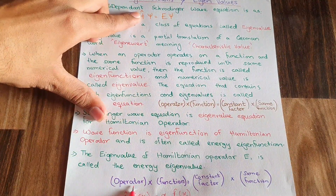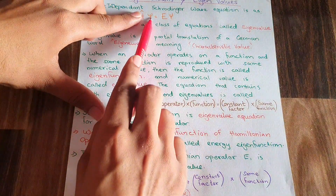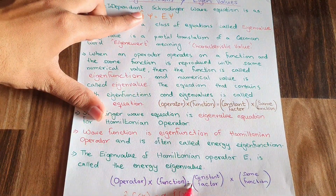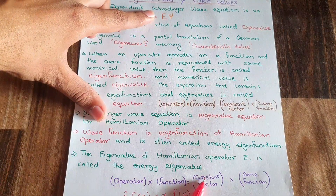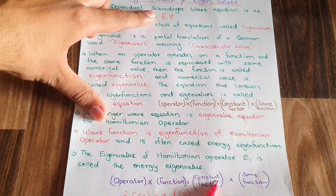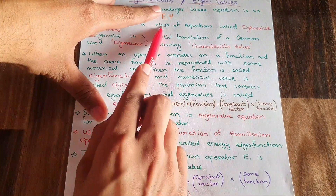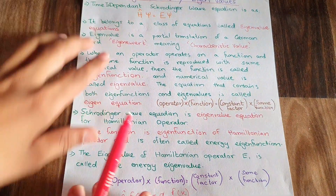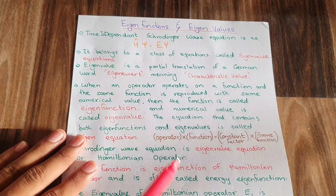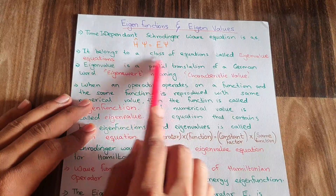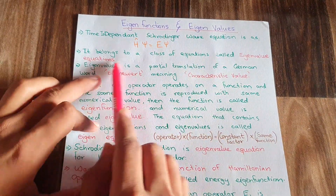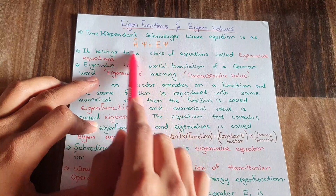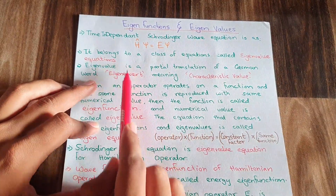ψ here is the function, and E is the constant factor — equal to constant factor E multiplied by ψ, the same function. So this belongs to the class of equations called the eigenvalue equation. Eigenvalue is a partial translation of the German word 'eigenwort', which means characteristic value.